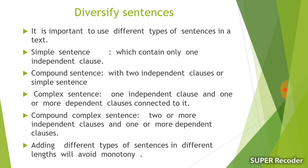A compound sentence contains two independent clauses. For example: 'I am going to school, and he is going to market.' These are two independent clauses joined together to form a compound sentence.